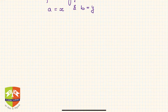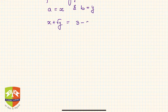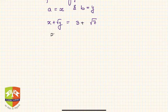If you have x plus root y is equal to 3 plus root 7, then x is equal to 3 and y is equal to 7. This is what is meant by equality of two surds.